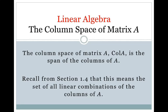By definition, the column space of matrix A, abbreviated col A, is the span of the columns of A. From section 1.4, this means the set of all linear combinations of the columns of A. So any element of the column space of A will look like x1 times column 1 plus x2 times column 2, all the way through xn times column n, where the x's are real number scalars.